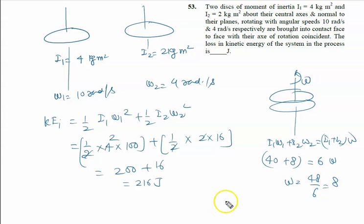Finally, kinetic energy: KE_final = ½(I₁ + I₂)ω². So ½(4+2)(8)² = ½(6)(64) = 3×64 = 192 joules.